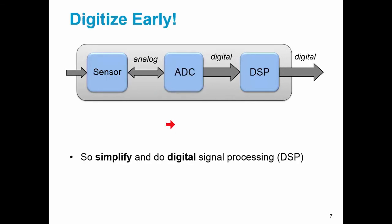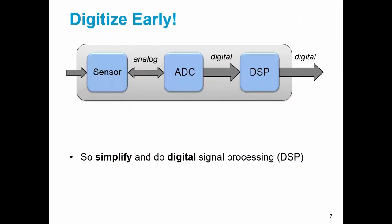One way to get around this limitation is to digitize early, which was the other maxim. And by that I mean moving the ADC as close as possible to the sensor and replacing the analog signal processing with digital signal processing, which can be more accurate, more flexible, and most importantly can be done in a near ideal fashion.